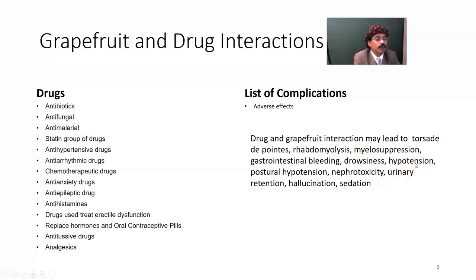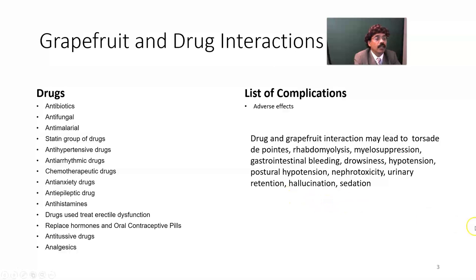Hypotension and postural hypotension may occur with certain antihypertensive drugs such as beta blockers. Nephrotoxicity and kidney failure may develop, as well as urinary retention where the patient cannot pass urine and the prostate gland may be swollen. Hallucination — a false sensory perception — and sedation are also possible adverse effects.